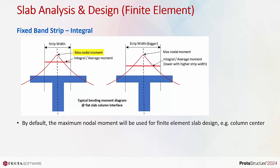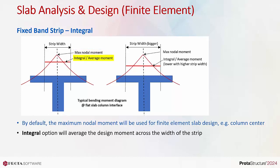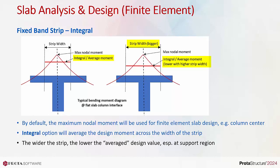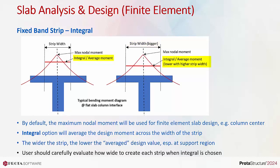The integral option will average the design moment across the width of the strip. As such, the wider the strip, the lower the average design value — especially at the column support region where the moment changes abruptly. The user should carefully evaluate how wide to create each strip when integral is checked; otherwise the design may be too unconservative.